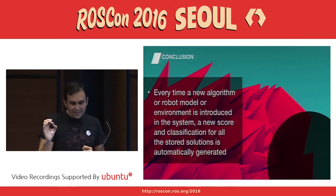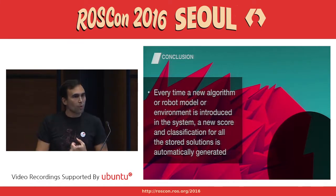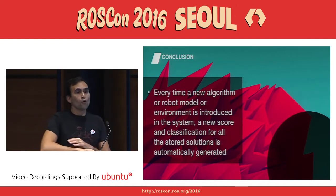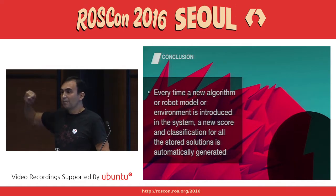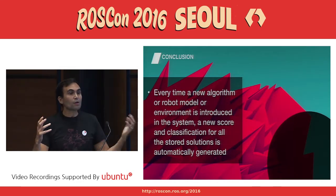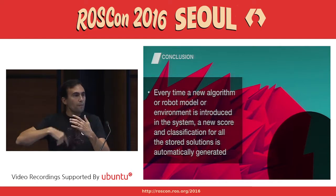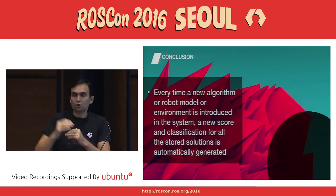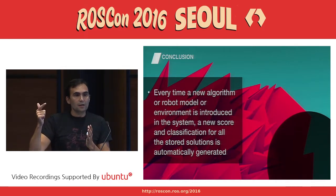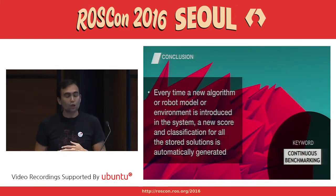As a conclusion, I would like to state this idea: every time a new algorithm, robot model, or environment is introduced into the system, a new score and classification for all the previous scores can be recalculated. So if we modify the MoveIt libraries, your algorithms may not have the same score, but it doesn't matter because our system will recalculate all of them again and generate the new classification automatically. You get a new distribution of scores on the current execution of the algorithms. We call this a kind of continuous benchmarking.